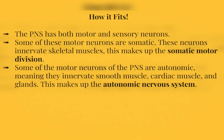Before we get started, I want to make sure you understand how the autonomic nervous division fits into the nervous system as a whole. The PNS has both a motor and sensory division. Some of these motor neurons are somatic — they innervate skeletal muscles, making up the somatic motor division. Some motor neurons are autonomic, meaning they innervate smooth muscle, cardiac muscle, and glands, making up the autonomic nervous system.